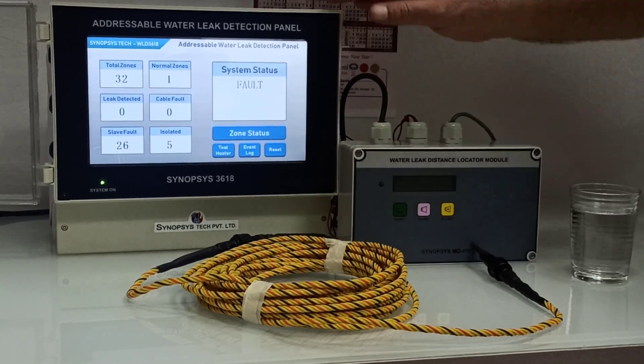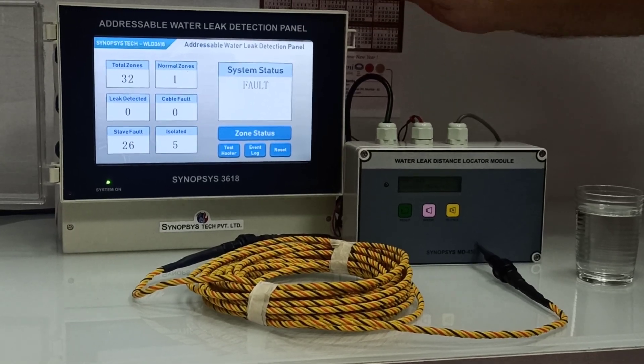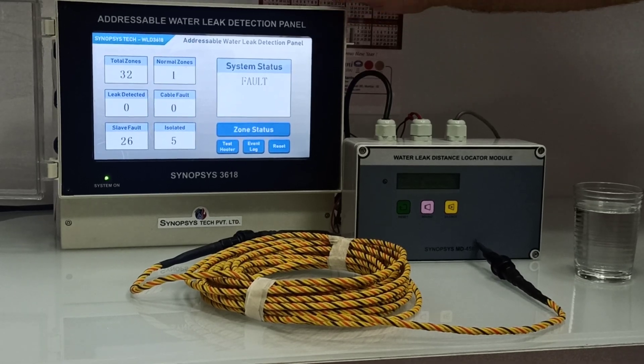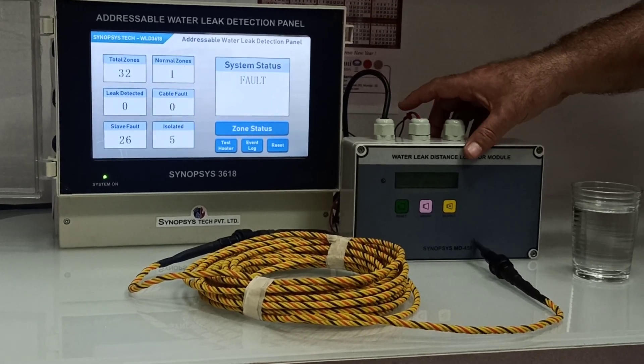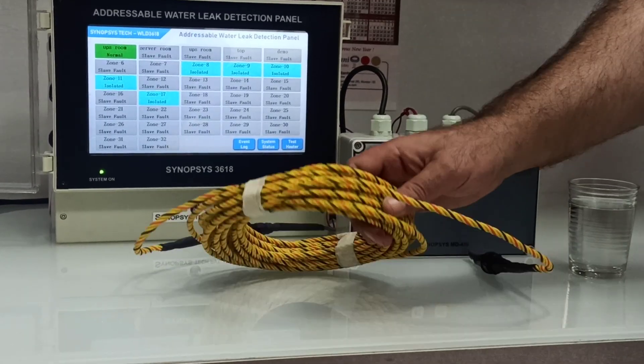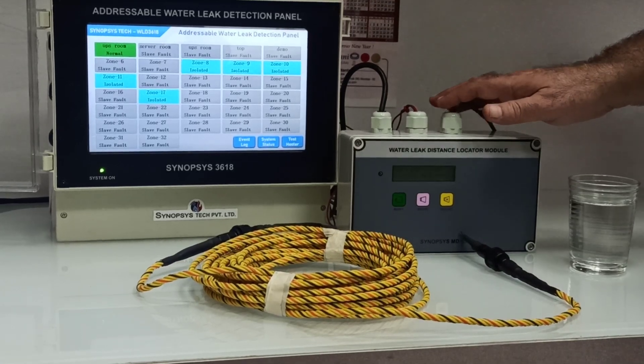We have a main panel which can take 32 SIM modules. This panel can take from 2 to 32 modules. Each module can take 150 meters of water leak cable, so the total water leak cable in a system will be around 4800 meters.